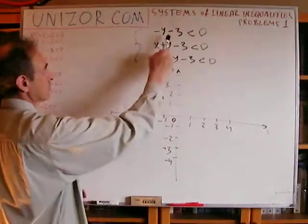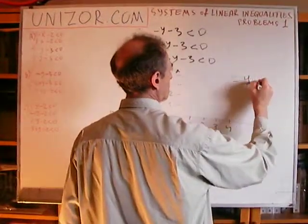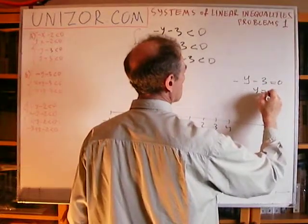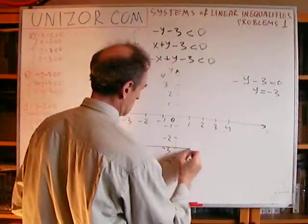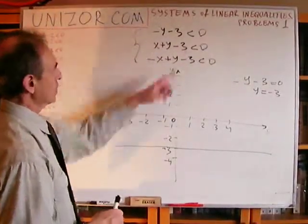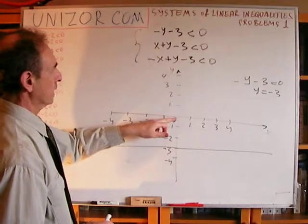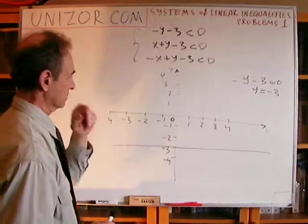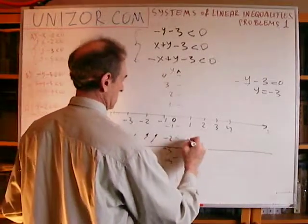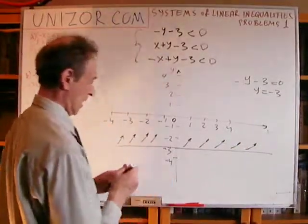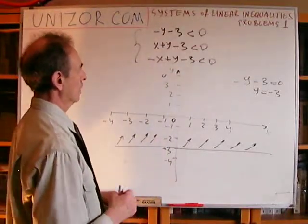Let's draw the graph of the first function. Minus y minus 3 equals 0 gives y equals minus 3. It's a horizontal line. We are interested in less than 0 — the point (0,0) belongs to our half plane because substituting gives a true statement. So we are interested in everything above this line.